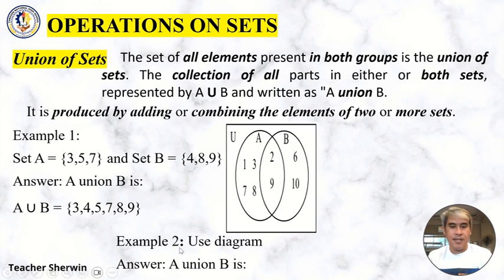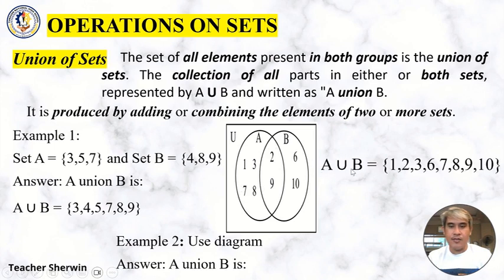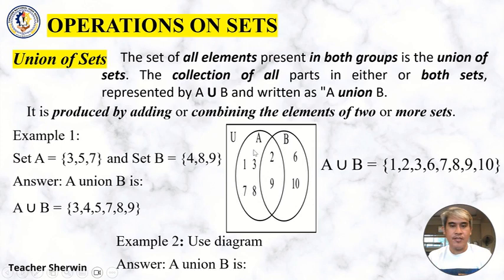How about in the diagram? So as you can see in the diagram, we have Set A and Set B. So A union B = {1, 2, 3, 6, 7, 8, 9, 10}. I just combine all the elements to create a Union of Sets.